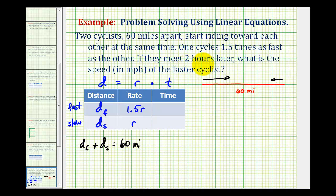And then it says they meet two hours later, so both of them are going to be cycling for exactly two hours. And now we do have enough information to write our equation. So the key here is knowing that d_f + d_s is equal to 60 miles,